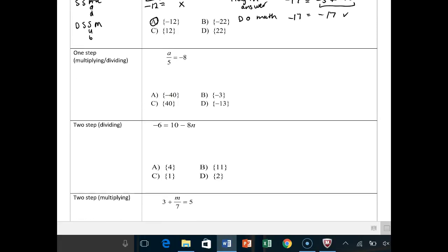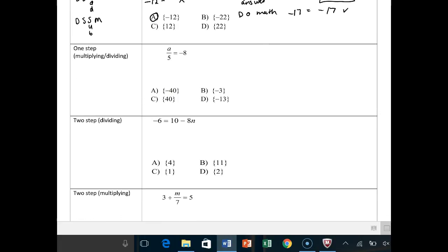One step with multiplying and dividing. Here, you have this problem, which is A over 5 equals negative 8. All right, so if you see division, or it looks like a fraction, all right.